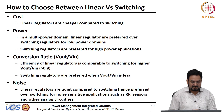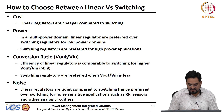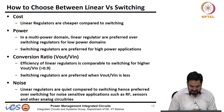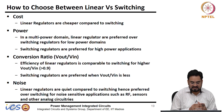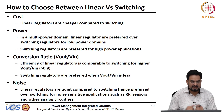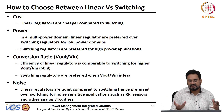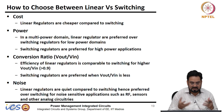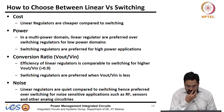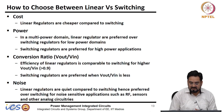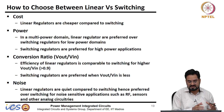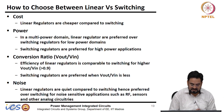Power is another consideration. In a multi-power-domain system, linear regulators are preferred for low power domains. For example, if 90 percent of the power is catered by switching and only 10 percent by linear regulators, even if the linear regulator has lower efficiency, the overall impact on efficiency will be negligible. Switching regulators are preferred for high power applications.